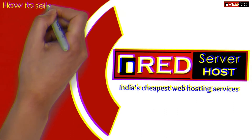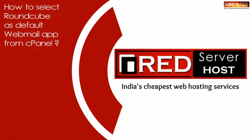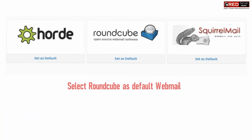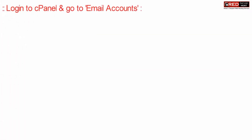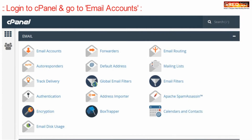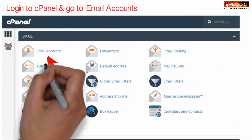Today in this video we will learn about how to select Roundcube as default webmail application from cPanel. If you want to select Roundcube as your default webmail application, login to cPanel and then go to the email account section.